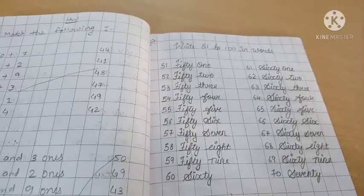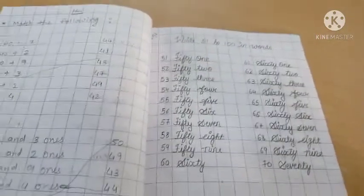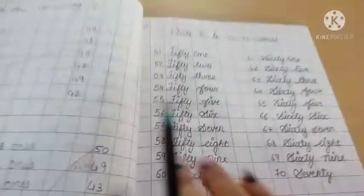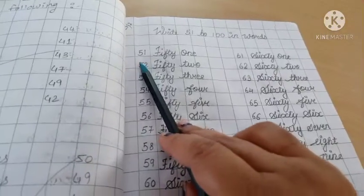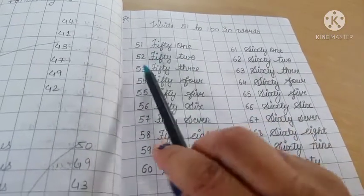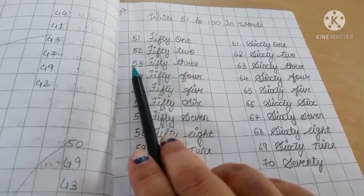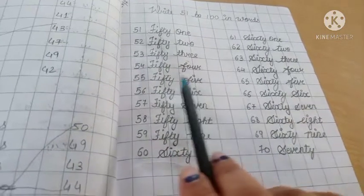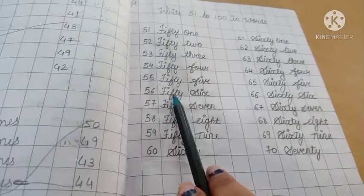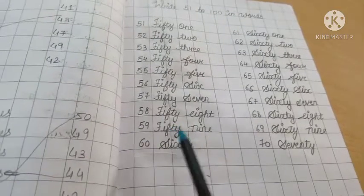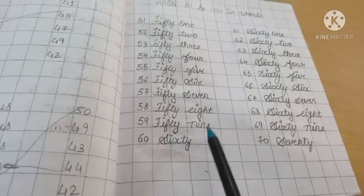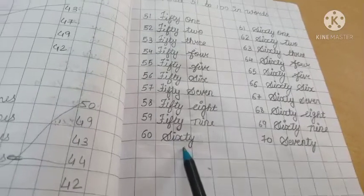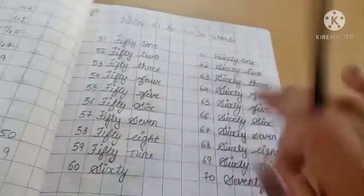Now children, 51 to 100 you have to write in your notebook in words. 51 to 100 in words you have to write. Okay, let's see once. 51, fifty-one. 52, fifty-two. 53, fifty-three. 54, fifty-four. 55, fifty-five. 56, fifty-six. 57, fifty-seven. 58, fifty-eight. 59, fifty-nine. And 60, sixty. Now again sixty's spelling.